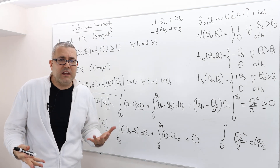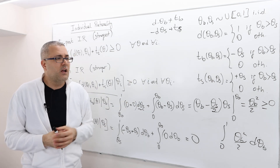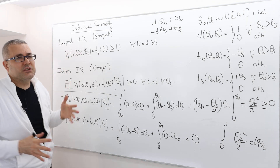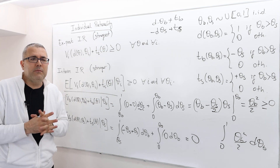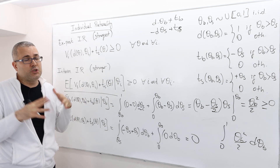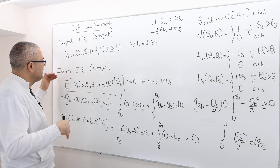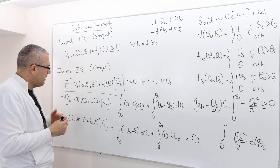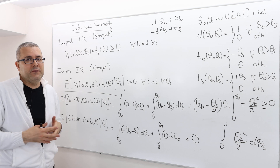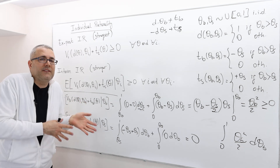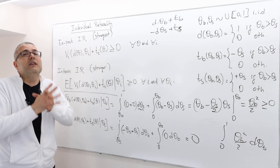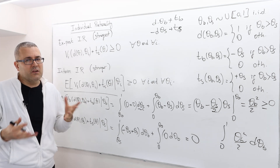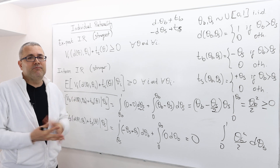Why do we care about three different versions? In some environments, ex-post IR is the desired outcome. But sometimes it's too strong, so we weaken the condition and look at interim IR. And if that doesn't hold, we go for ex-ante IR. If even ex-ante IR doesn't hold, the mechanism isn't very useful.